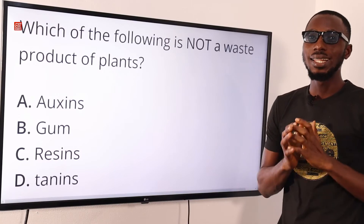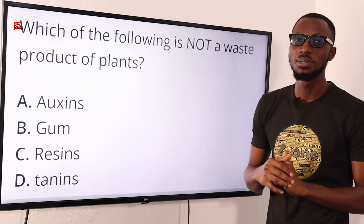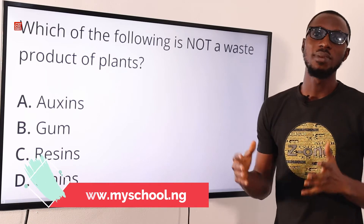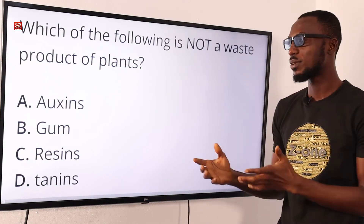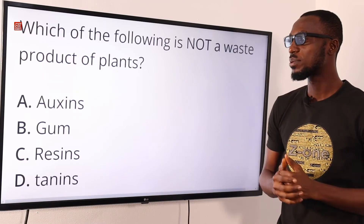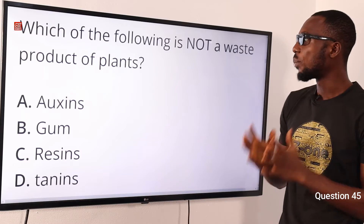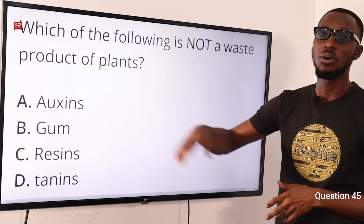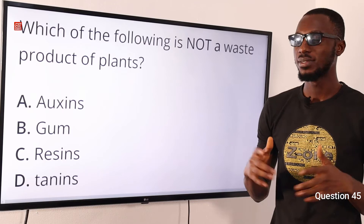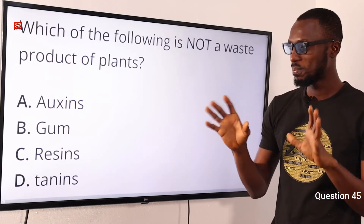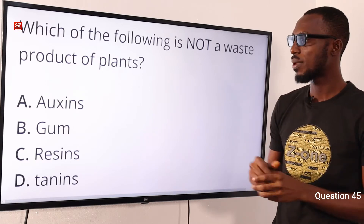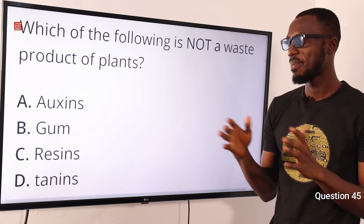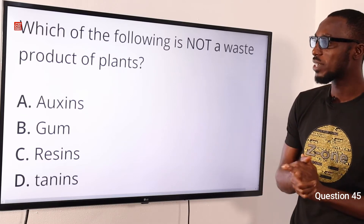You can get any of the MySchool tools by clicking the link in the description below, which will take you to the MySchool website where you can get the MySchool mobile app for smartphones or the software for laptops and desktops. Question 45: Which of the following is not a waste product of plants? The answer is auxins. Auxins are actually plant hormones responsible for stem elongation, and industrially they can be used to make selective weed killers. So the correct option is option A for auxins.